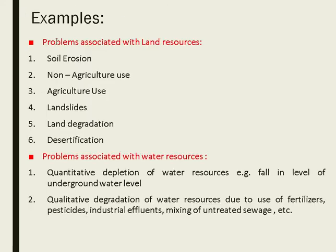Problems associated with land resources include soil erosion, non-agricultural use, agricultural use, landslides, degradation, and desertification. Problems associated with water resources include quantitative depletion — a fall in the level of underground water — and qualitative degradation, which means use of external pollutants like fertilizers and pesticides.